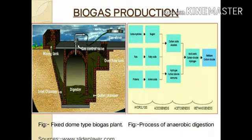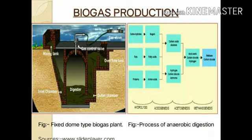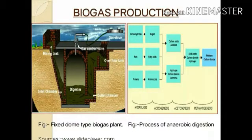Biogas can be produced in a fixed-type biogas plant, which is very easy to use. In the mixing tank, cow dung or other household waste is added along with water to make a slurry. After making the slurry, it flows to the inlet chamber and into the digester tank, which is the main hub of the process.